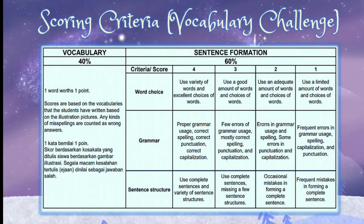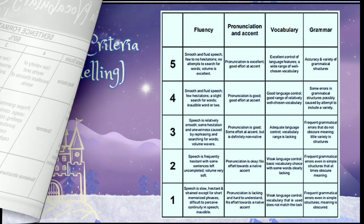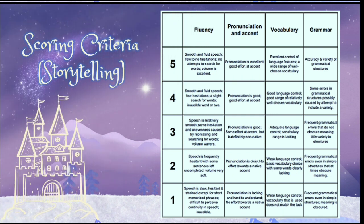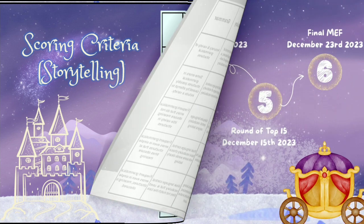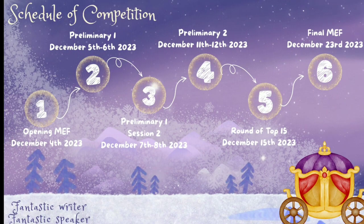Regarding scoring criteria, there are two main categories. The first is Vocabulary, which is worth 40% of the total score. For the Storytelling scoring criteria, there are four criteria: Fluency, Pronunciation and Accent, Vocabulary, and Grammar.